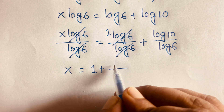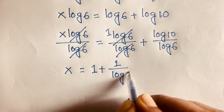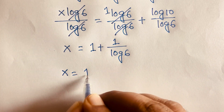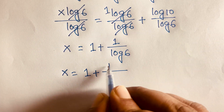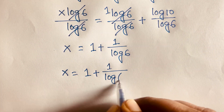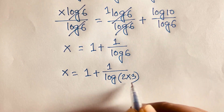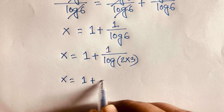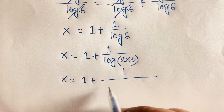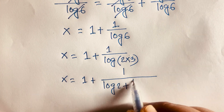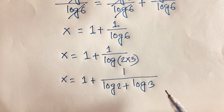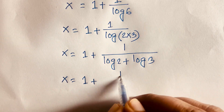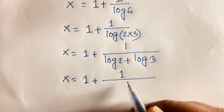We know that log 10 equals 1, so x is equal to 1 plus 1 over log 6. And log 6 can be written as log(2·3), which equals log 2 plus log 3. So the equation becomes x is equal to 1 plus 1 over (log 2 plus log 3).